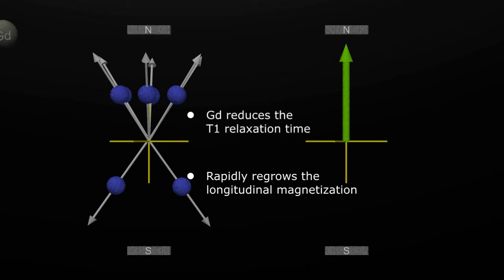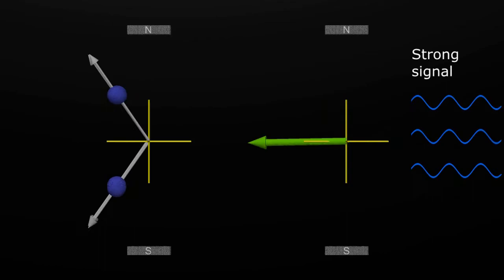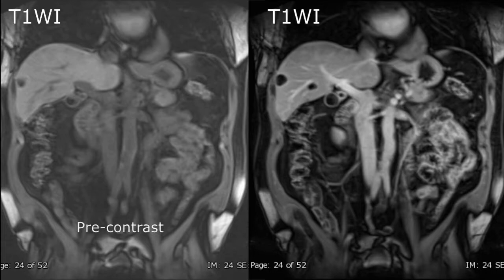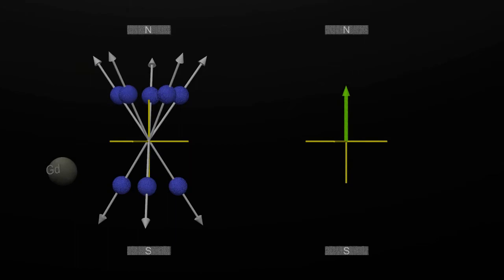For example, here are two T1-weighted images of the abdomen. Before gadolinium, all the vessels appear homogeneously gray and are difficult to see against the background of the normal regional soft tissues. Following gadolinium administration, the vessels now show up bright white as the gadolinium causes the protons in the blood to fall back quickly to their baseline state, recovering the longitudinal magnetization and producing a strong NMR signal on this T1-weighted image.